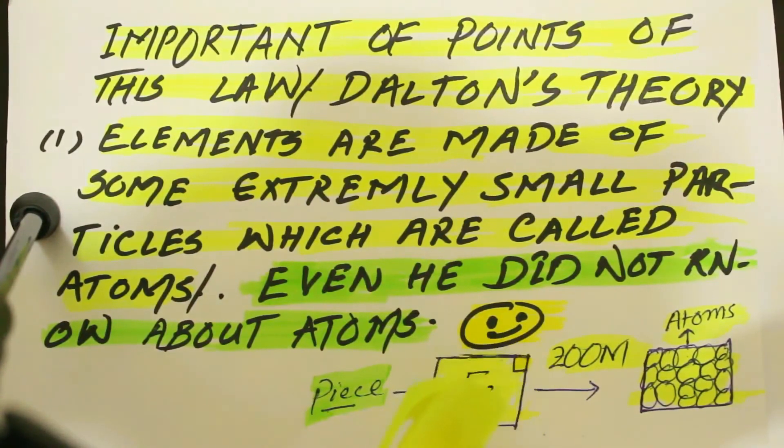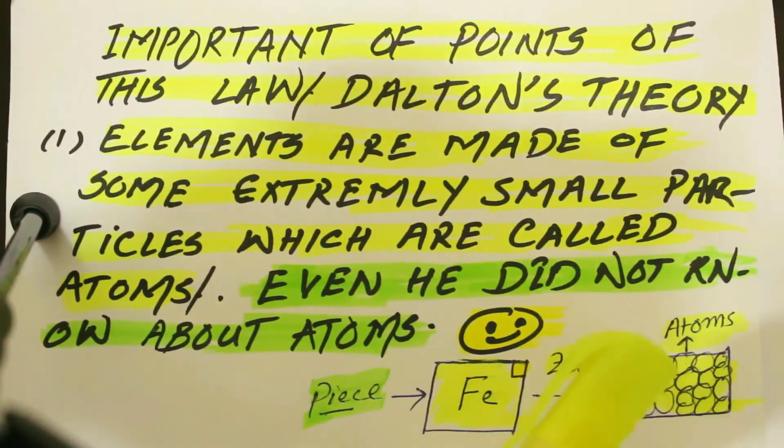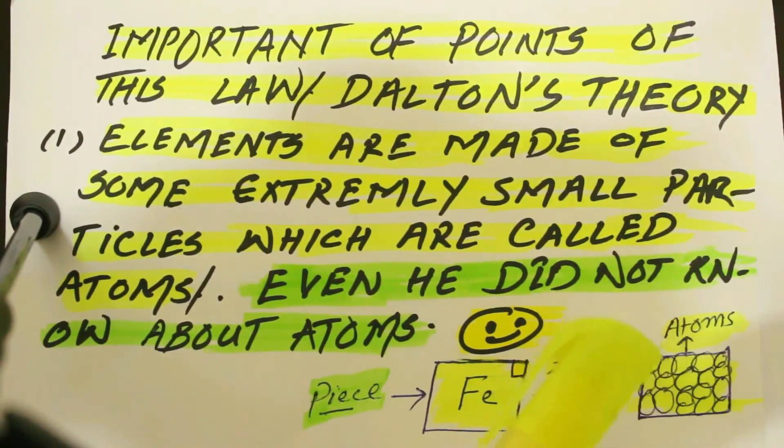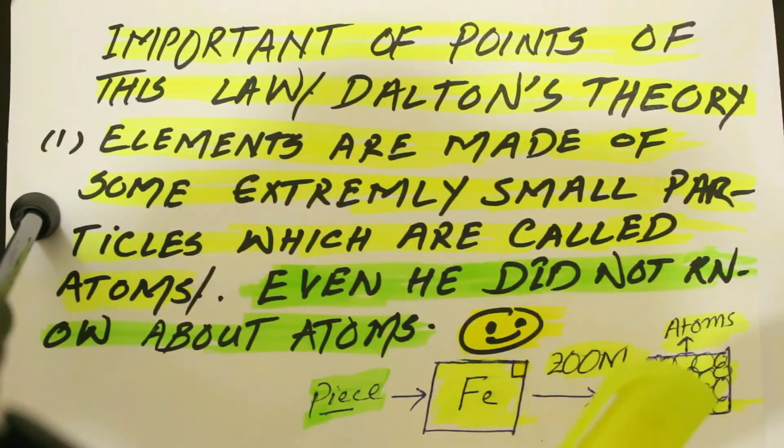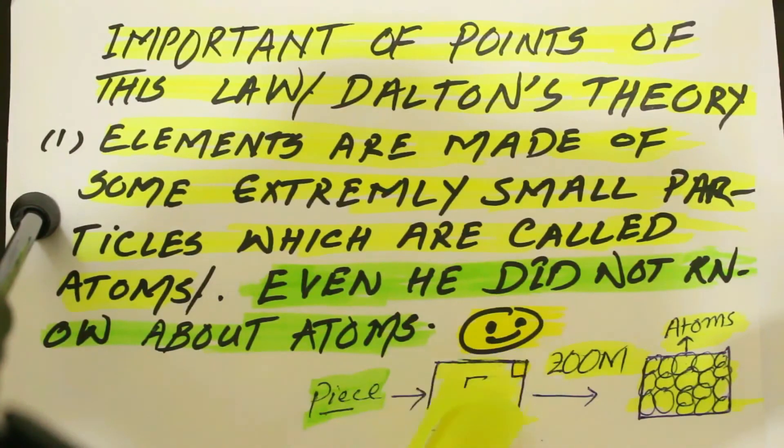If we zoom out this small portion which is represented by a small rectangular area, you can see that this small portion is made up of extremely small particles and these particles are called atoms, which are definitely iron atoms. They arrange themselves in a way to make this iron sheet.